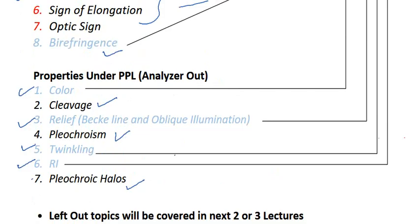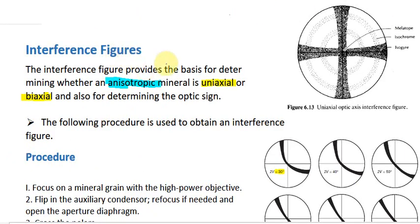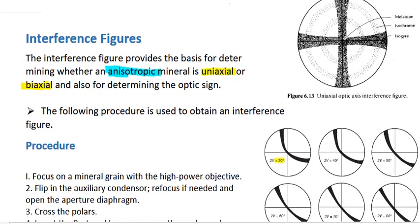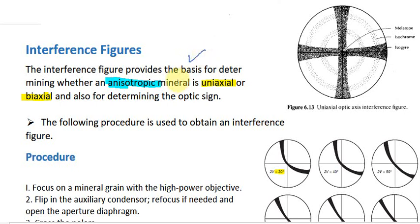Let's talk about interference figures. Interference figures provide the basis for determining whether an anisotropic mineral is uniaxial or biaxial. Using interference figures we determine whether an anisotropic — that is, birefringent — mineral is uniaxial or biaxial. I am assuming you already know what uniaxial and biaxial mean; you can watch my previous videos on optical mineralogy for reference.